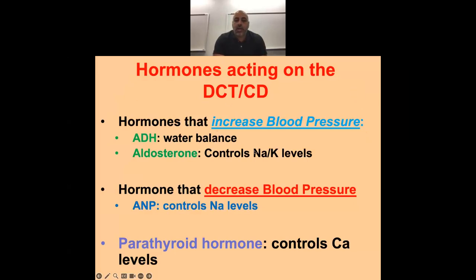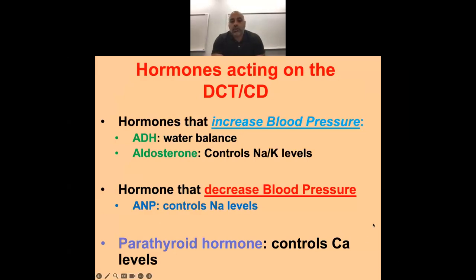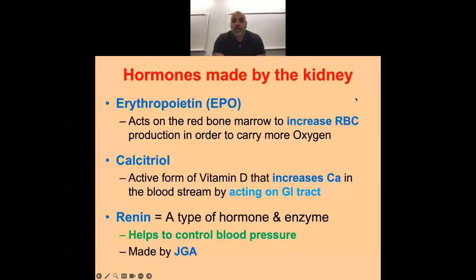So we talked about ADH, aldosterone, ANP, and parathyroid. Make sure you go through when each is released, what happens in the bloodstream, and what happens in the urine — what levels increase or decrease depending on whether you release or don't release the hormone.